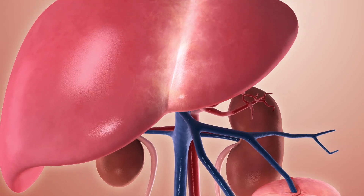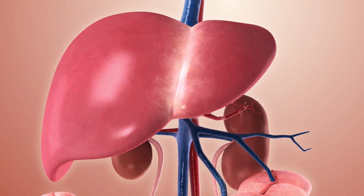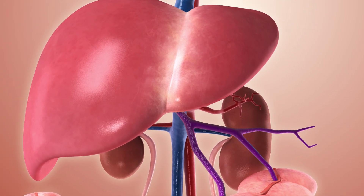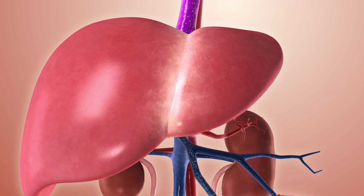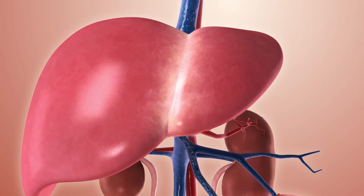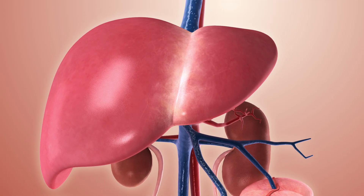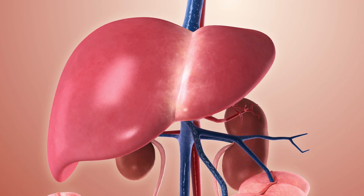The next stop on the journey is the liver. The aspirin-rich blood will enter the liver through the hepatic portal vein at the bottom, and it will exit at the top via the hepatic vein. At this stage, even more of the aspirin will be removed through a process called first-pass metabolism.